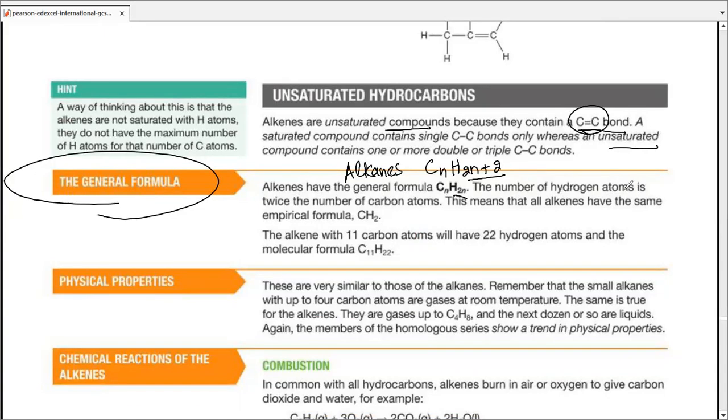So the number of hydrogen atoms is twice the number of carbon atoms, which means alkenes have the same empirical formula. All the alkenes on the planet have this empirical formula. So the alkenes with 11 carbon atoms will have 22 hydrogen atoms, and the molecular formula would be like this. Again, the empirical formula would be like this. So it's pretty easy. No matter which formula we're talking about, all the alkenes on the planet can be simplified to the empirical formula CH2.